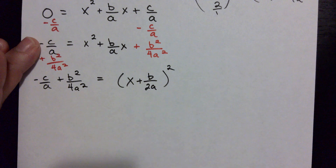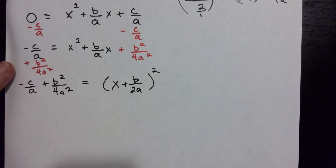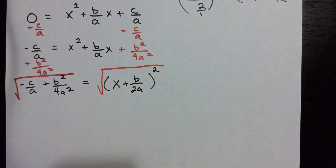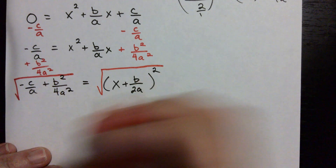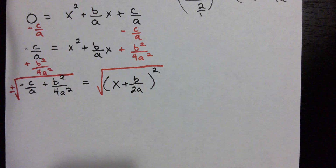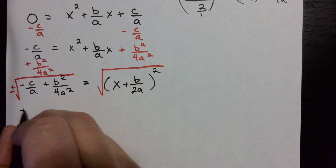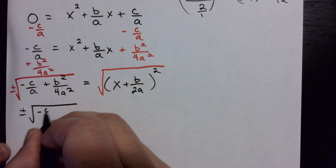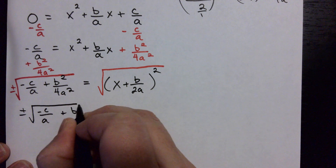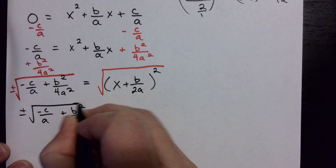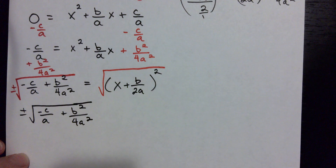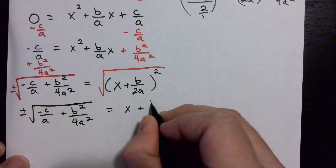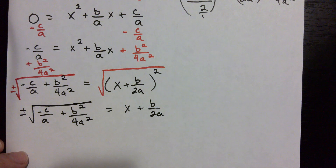Now we can take the square root of both sides to get rid of that square. Recall that when you square root in an equation, you have to put a plus or minus on one side. So that gives us: plus or minus the square root of (negative c/a + b²/4a²) equals x + b/(2a), since the square root of a square cancels the square.